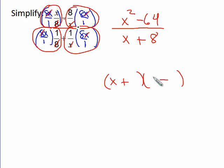So x squared must be x times x, and 64 must be 8 times 8. And then in my denominator, I have an x plus 8.